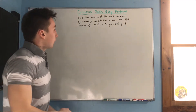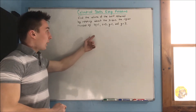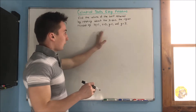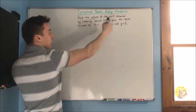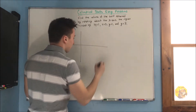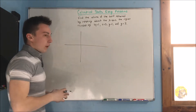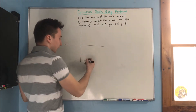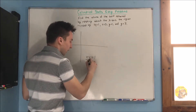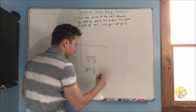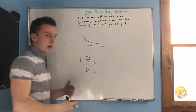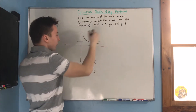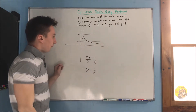Now we have our next problem: find the volume of the solid obtained by rotating about the x-axis the region bounded by xy equals 1, x equals 0, y equals 1, and y equals 3. Let's graph what this region is going to be. If you divide both sides of xy equals 1 by x, you get y equals 1 over x — a graph you should know. So we have x equals 0, y equals 1, and y equals 3, giving us our region R.